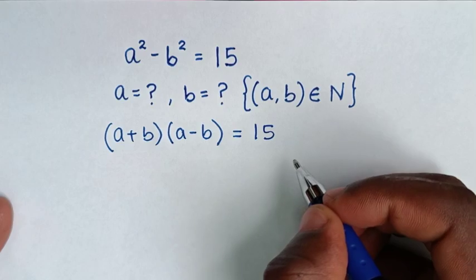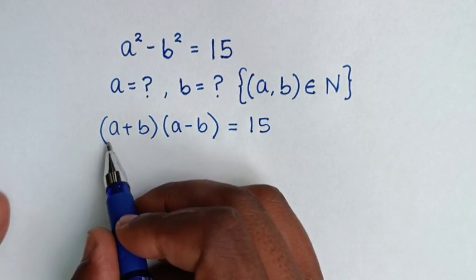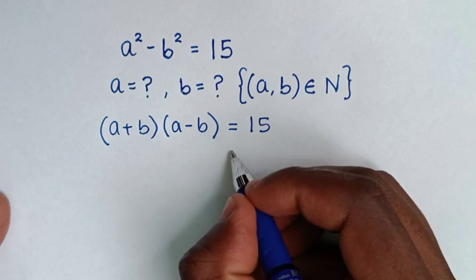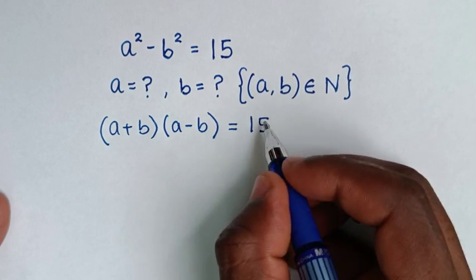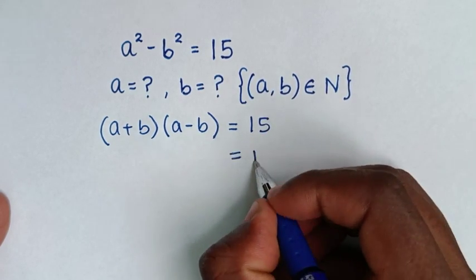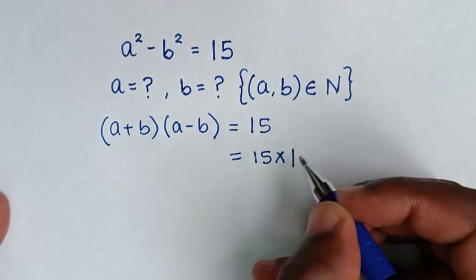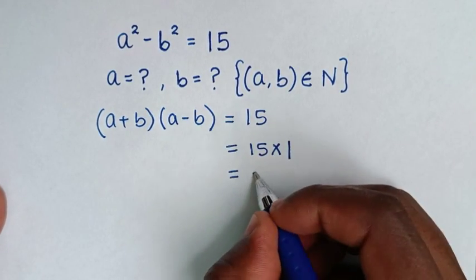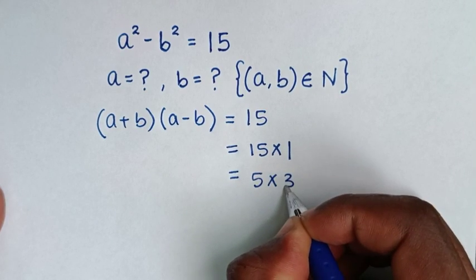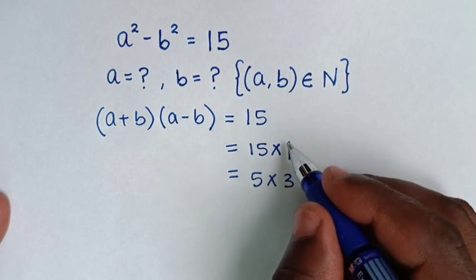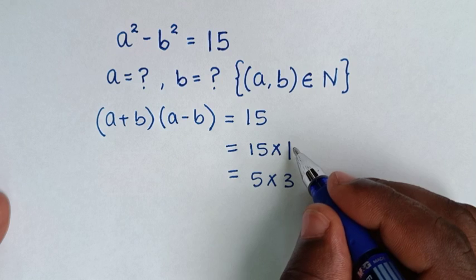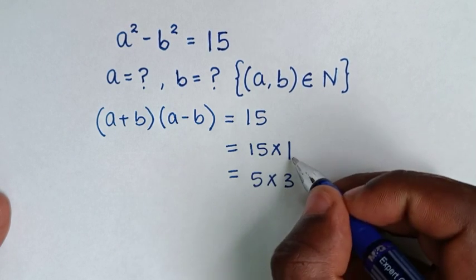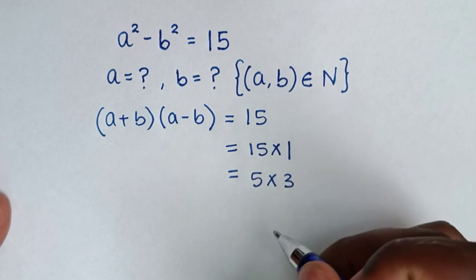Now, because we have a multiplication of two factors equal to 15, we have two choices for factor pairs. 15 can be written as 15 times 1, or as 5 times 3.